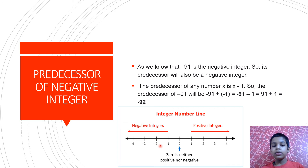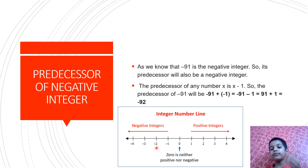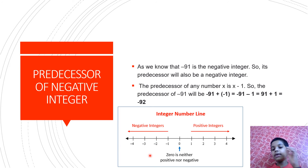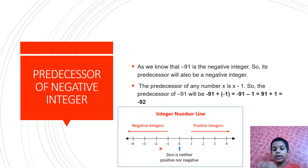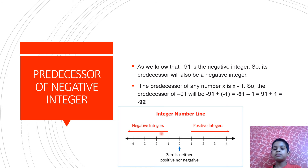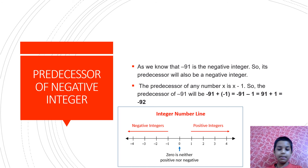Now let's visualize it on the number line. This is minus 2. If we subtract 1 from it, minus 1 is taking one step to the left, so minus 2 minus 1 is going one step to the left, which is minus 3. As we already learnt, minus 1 is greater than minus 2. In the same way, minus 2 is greater than minus 3, and so minus 91 is greater than minus 92. So minus 92 is the predecessor of minus 91.